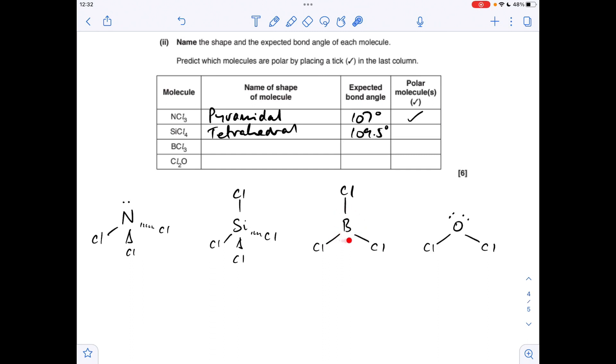BCl3 now—we've got three bonding regions and no lone pairs, so this is trigonal planar. The angle associated with that is 120 degrees. Again, we've got another symmetrical molecule, so all these dipoles cancel, so this isn't polar either.